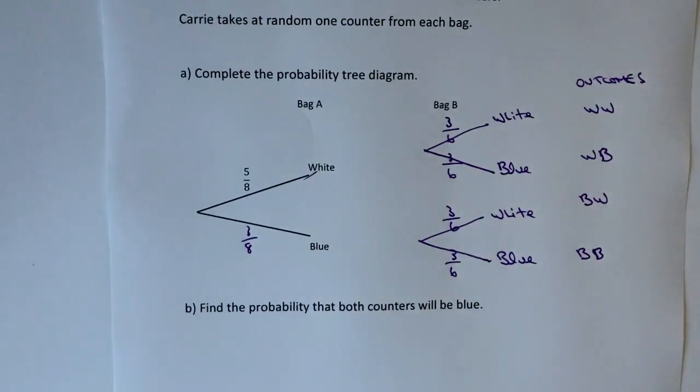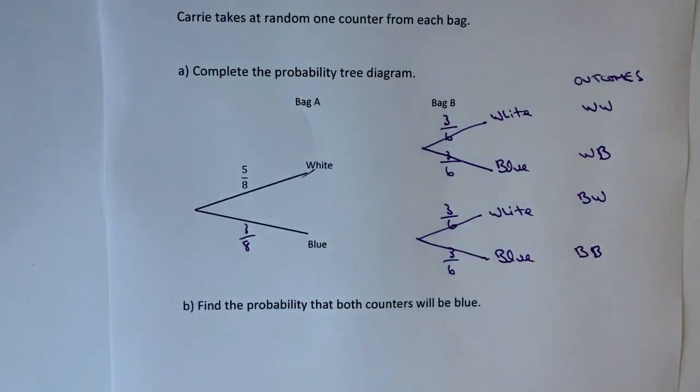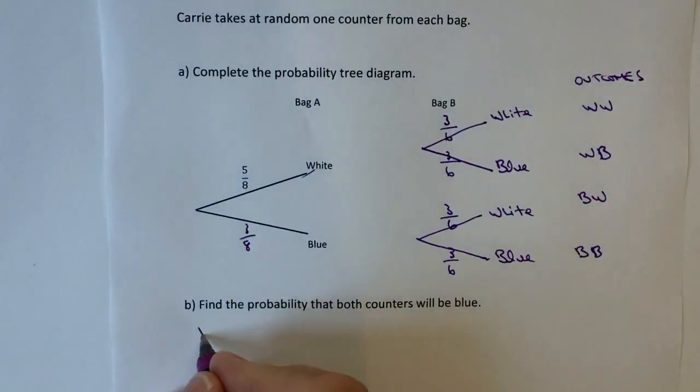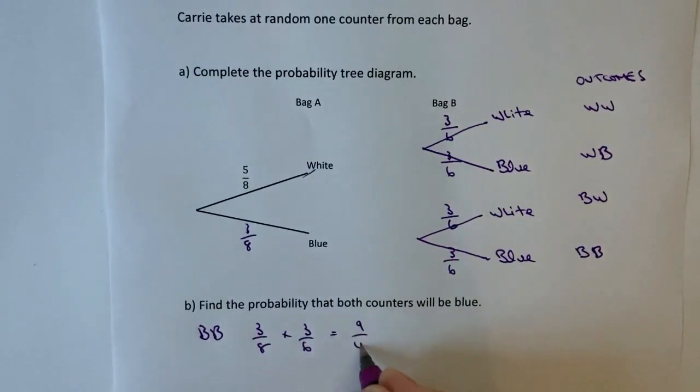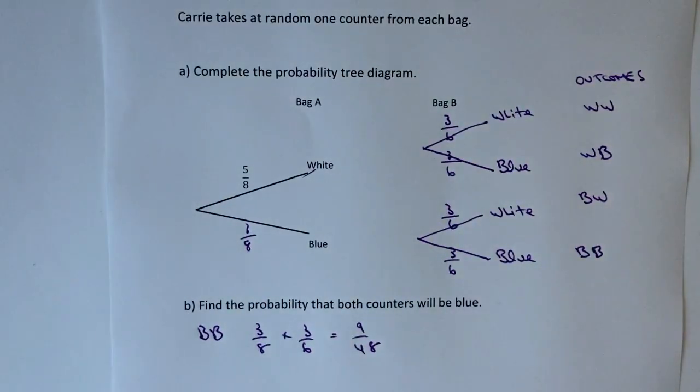To find the probability that both counters will be blue, we take the probability of the first one and multiply it by the probability of the second one. So blue blue is going to be three over eight multiplied by three over six, which is going to give us nine over forty-eight, which does answer the question.